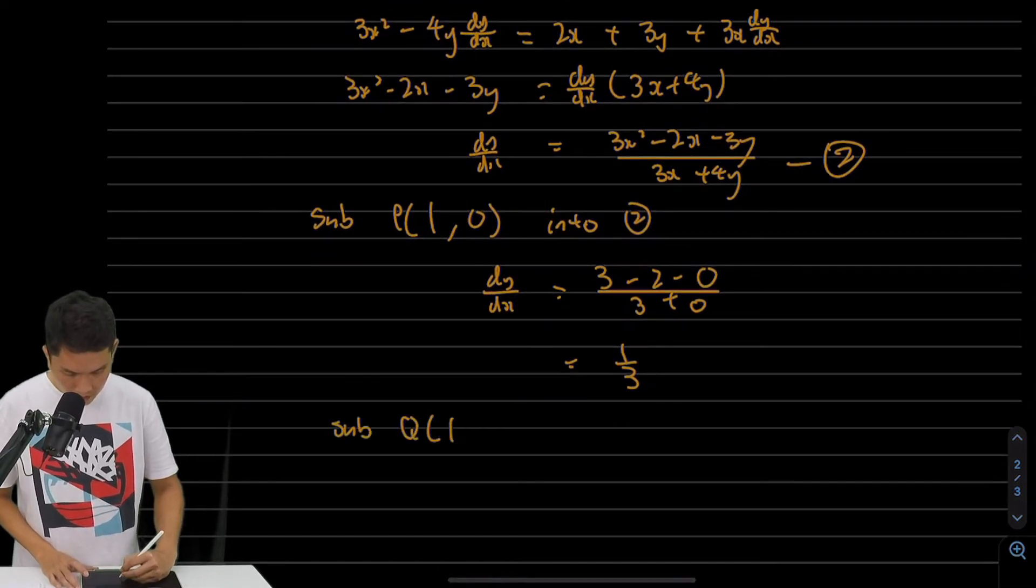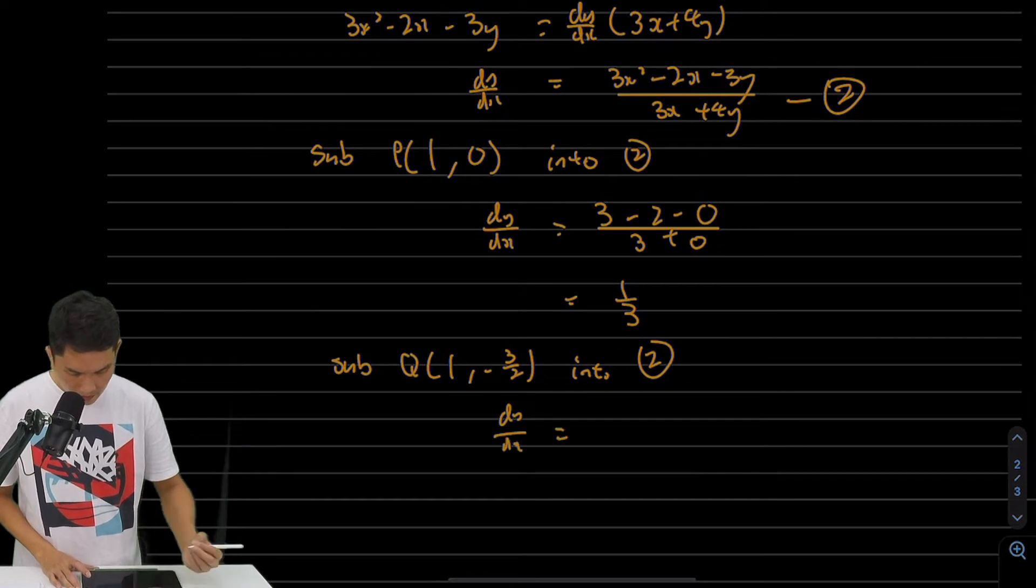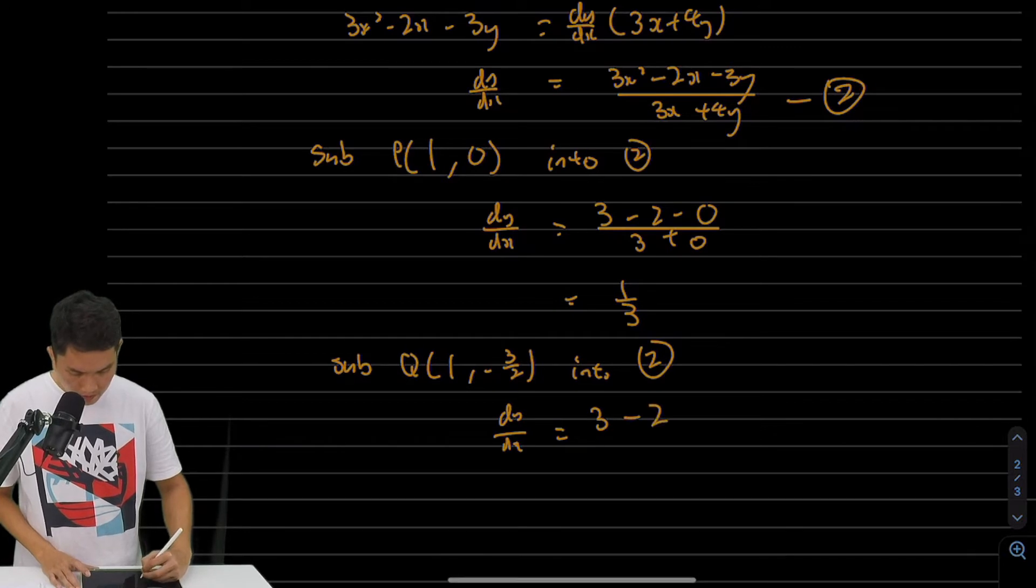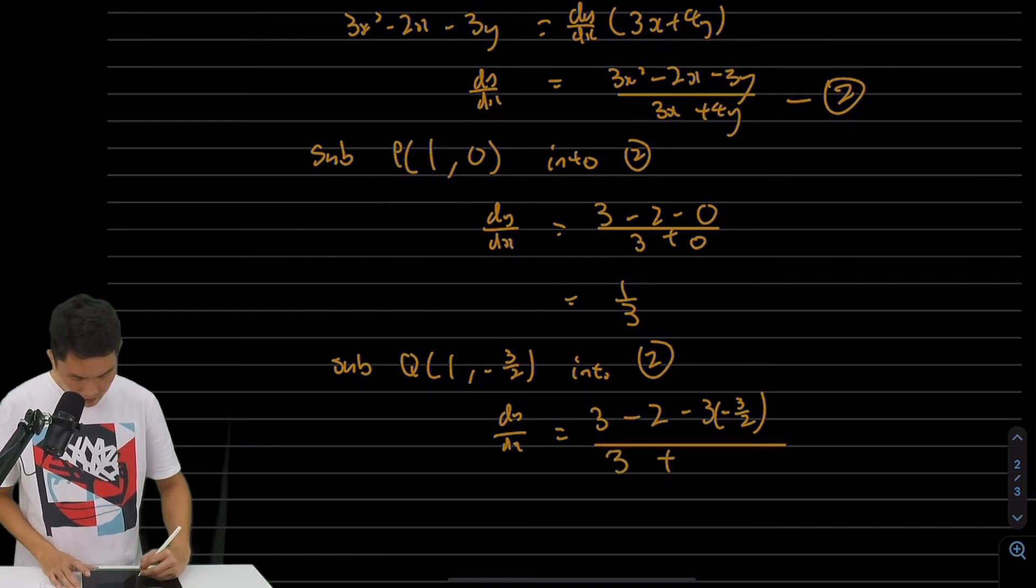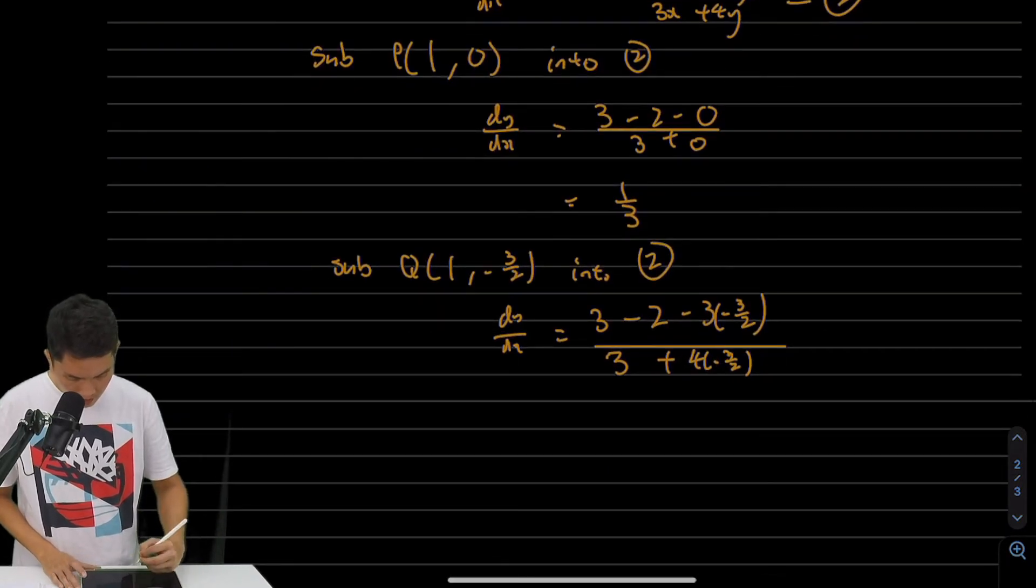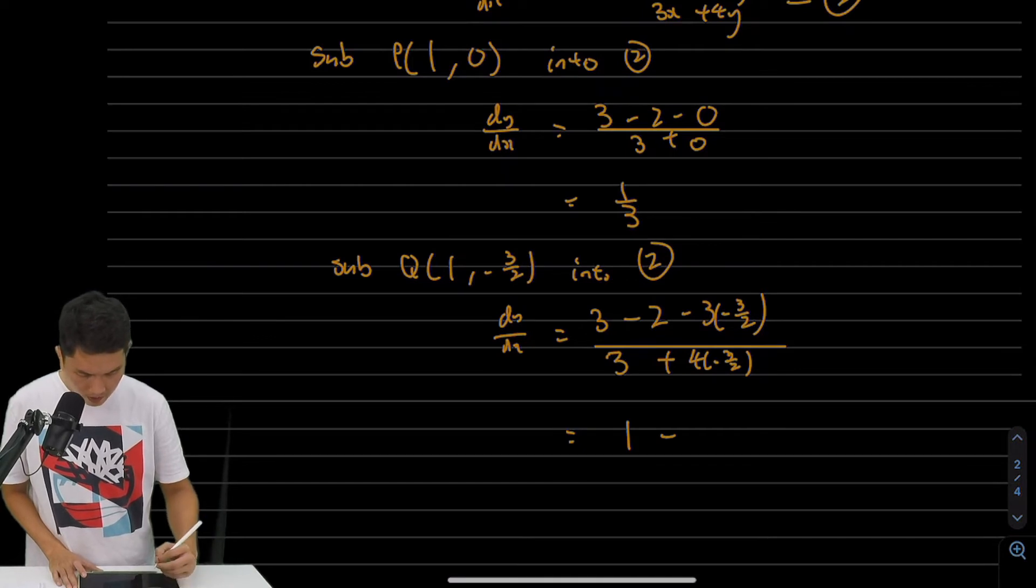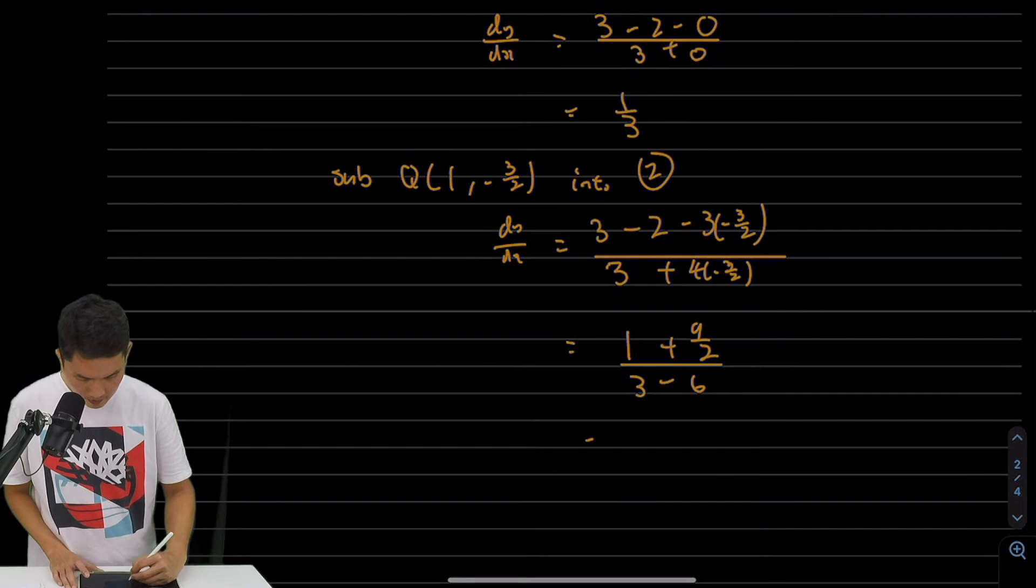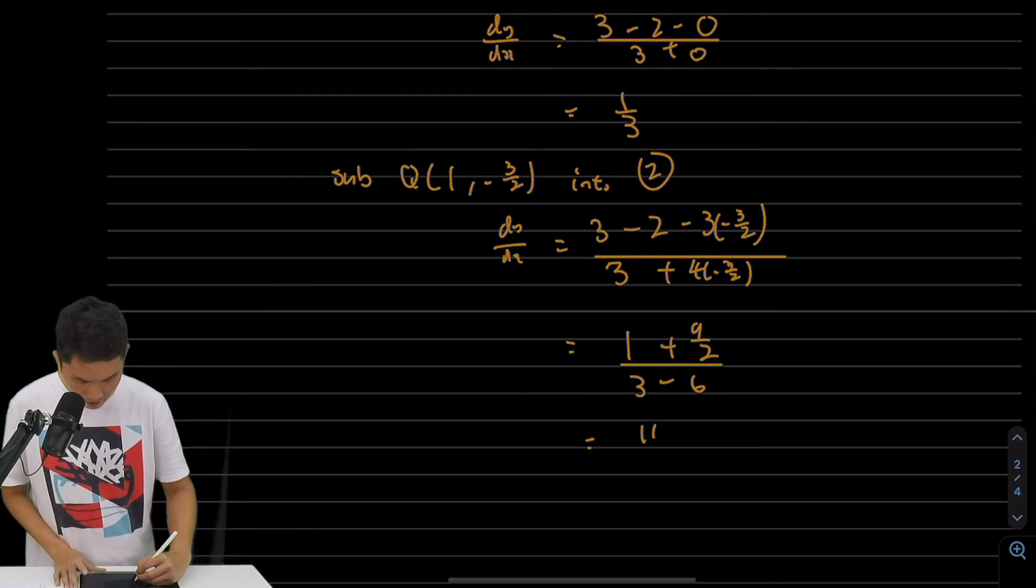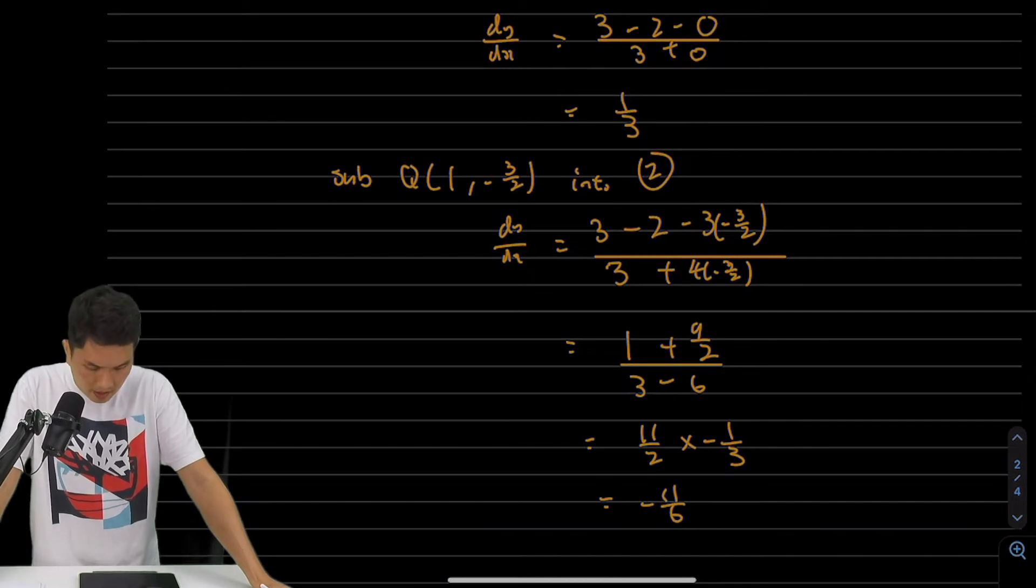Next, let's substitute Q (1, -3/2) into equation 2 for dy/dx. This gives [3(1)² - 2(1) - 3(-3/2)]/[3(1) + 4(-3/2)]. This is less straightforward. We get 3 - 2 = 1, minus 3 times -3/2, which is plus 9/2, over 3 - 6. That gives (11/2)/(-3) = -11/6. So the gradients at points P and Q are 1/3 and -11/6.